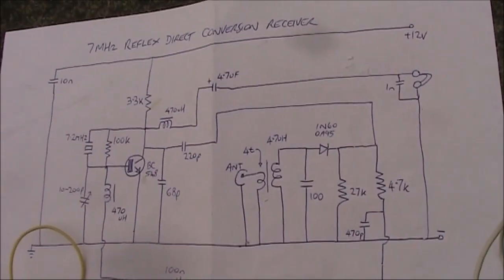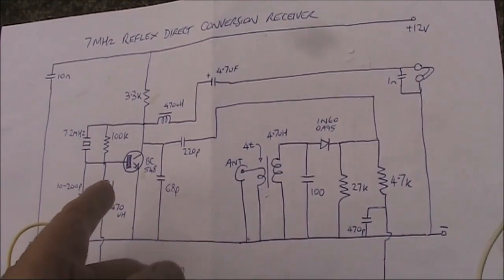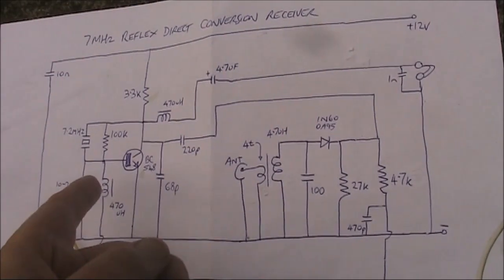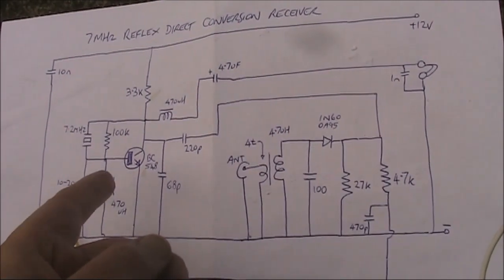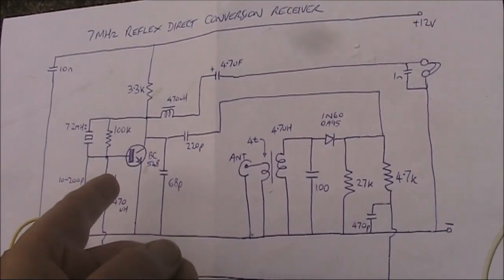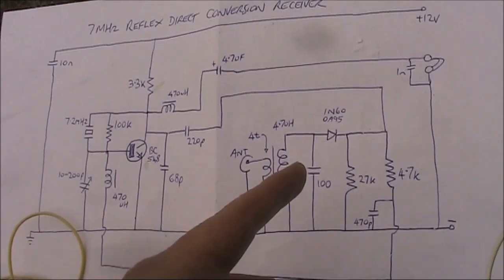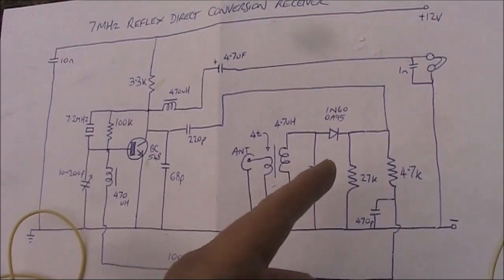The benefit of this reflexing arrangement is that the one transistor does two functions. One to operate as your local oscillator at RF frequency, and secondly to operate as an audio amplifier to boost the very low output from the mixer stage you see here.